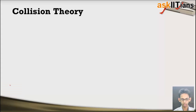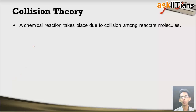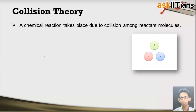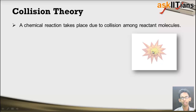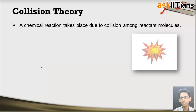Collision theory states that a chemical reaction takes place due to collision among the reactant molecules. That means the molecules of reactants come together and they collide with each other, and because of this collision the product is formed. Just see here the reactants A, B and C are colliding and because of this collision the product is formed. So according to collision theory, the basic idea behind any chemical reaction is the collision between the molecules of reactants.